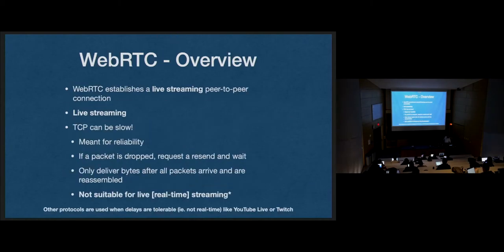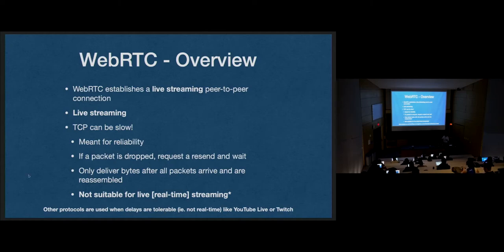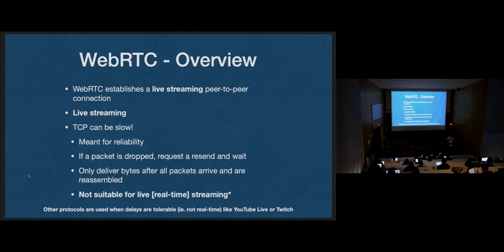YouTube streaming or Twitch don't use UDP, and there is a decent amount of delay. It would be difficult to have a phone call with somebody on Twitch — chat's always a little bit behind, a matter of seconds. The way they work is you send your video and audio feed, they process it and host it using HLS — HTTP Live Streaming — and then it's HTTP requests to get the video over TCP. So there's a decent amount of delay there.